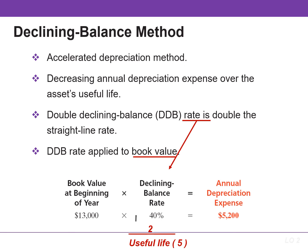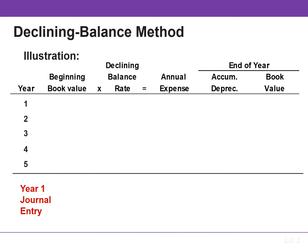Book value is the cost minus accumulated depreciation. Note that salvage value is not included in the formula — it is ignored until the last year. Book value for the first year is the cost of the asset, but in subsequent years book value is the difference between cost and accumulated depreciation at the beginning of the year.